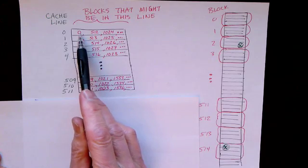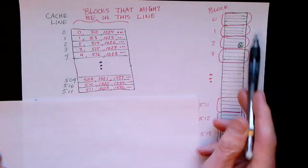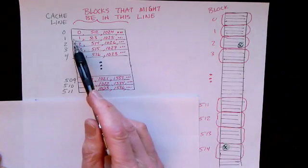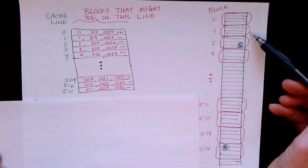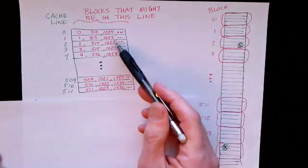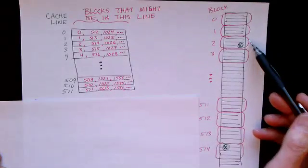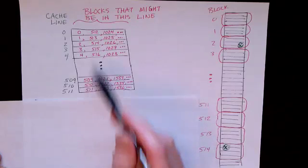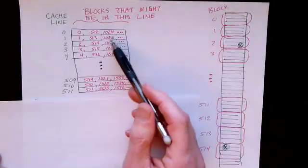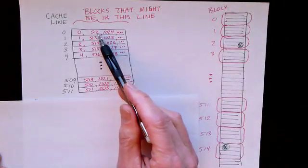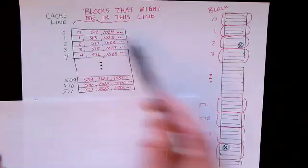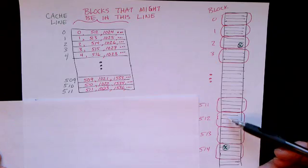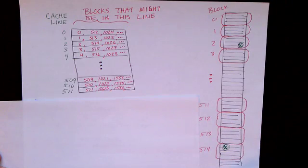So the first line, which we call line 0, can contain this block. Line number 1 can contain block number 1. Line number 2 can contain block number 2. And so on, all the way up to 511. And then block 512 has to go back, has to go into line 0. So line 0 can either store this block, or this block, or block 1024, which is down here below.